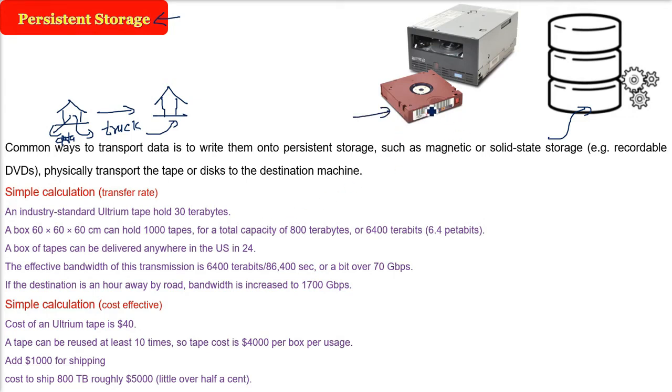This is the ultrium tape and it can hold 30 terabytes. Now, we would like to transfer say 800 terabytes. Terabytes means it will be 6400. One byte is 8 bit. It becomes 6400 terabits. You can convert it into petabits also, 6.4 petabits. In United States, for example, anywhere you want to send some delivery, it will be in 24 hours.